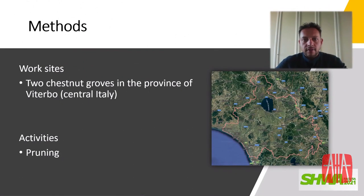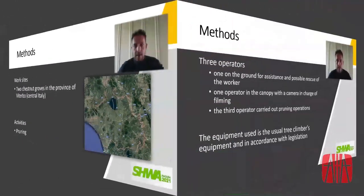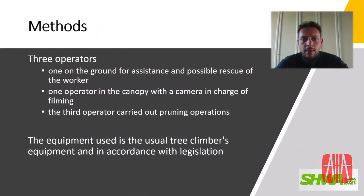The work site was two chestnut groves located on Mount Cimino in the province of Viterbo. Three operators were needed: one on the ground to assist and rescue, one qualified to climb trees, and one in the canopy equipped with a camera to film. A third operator performed pruning. Equipment included access and positioning devices, personal protection equipment, and power cutting tools such as axes, telescopic poles, and chainsaws.